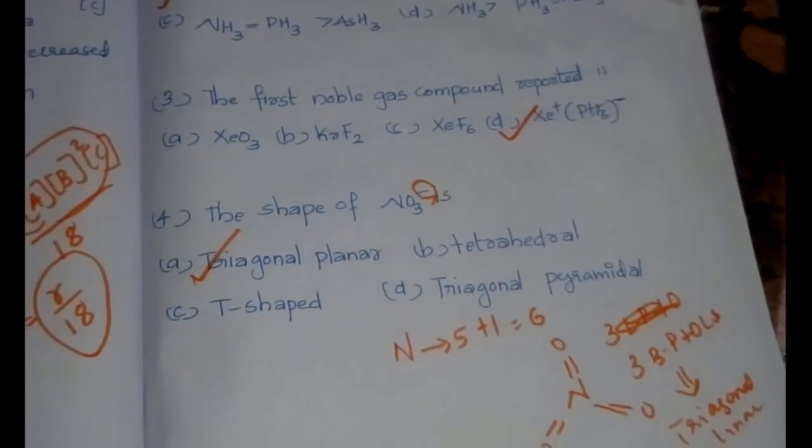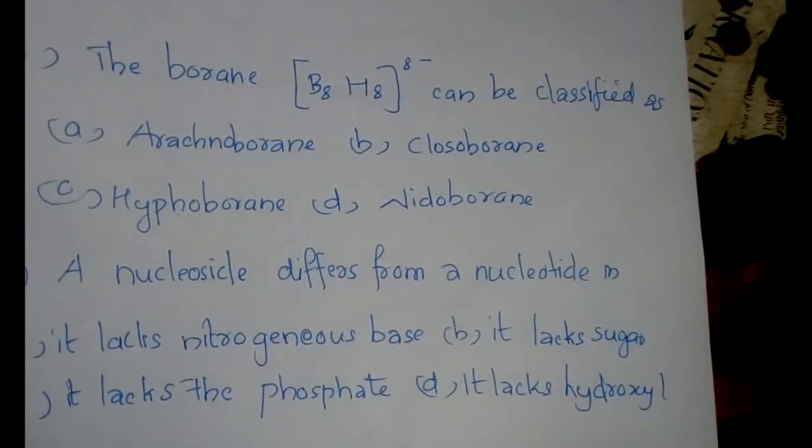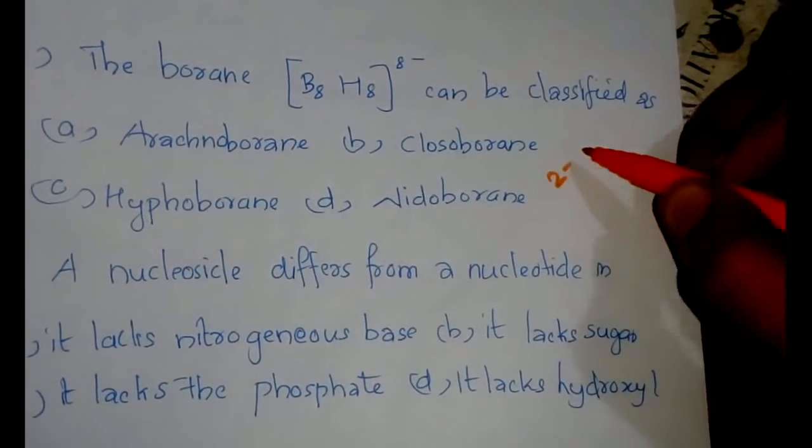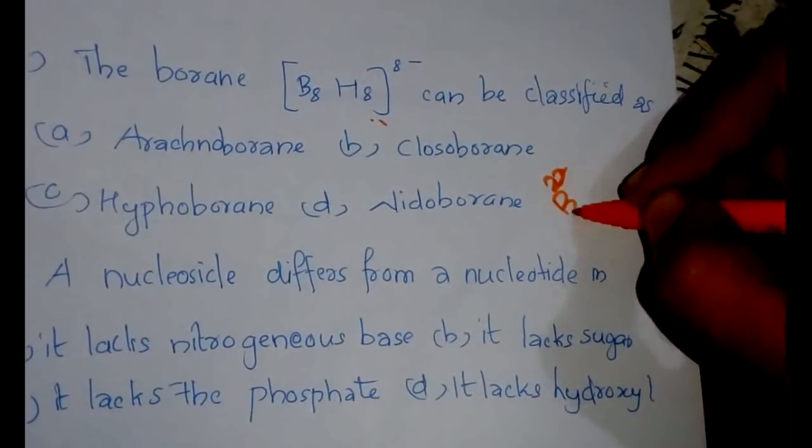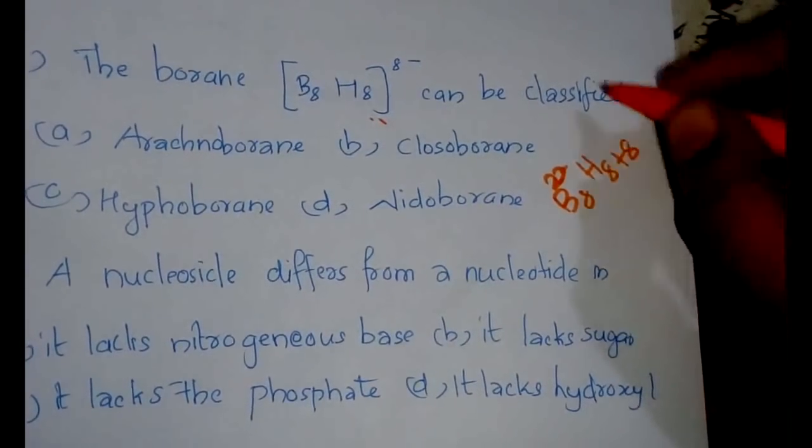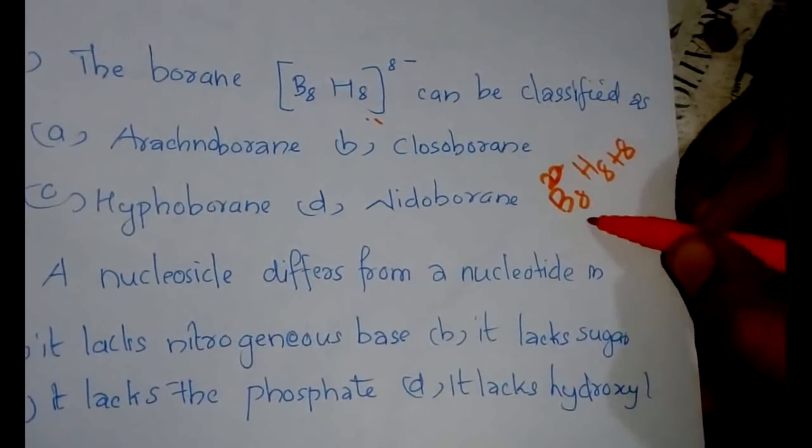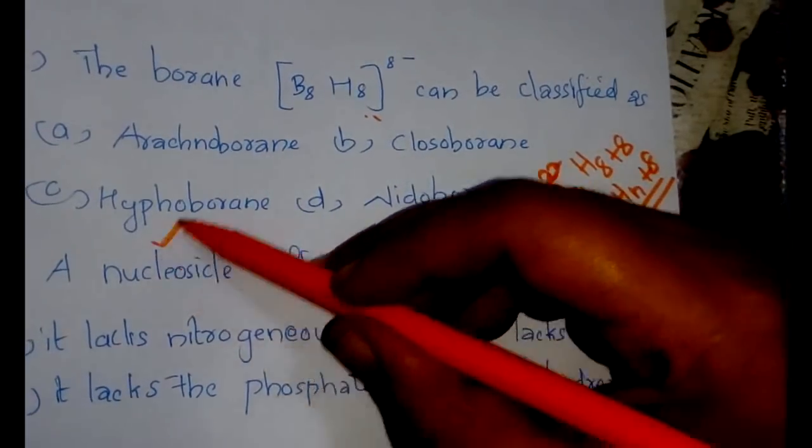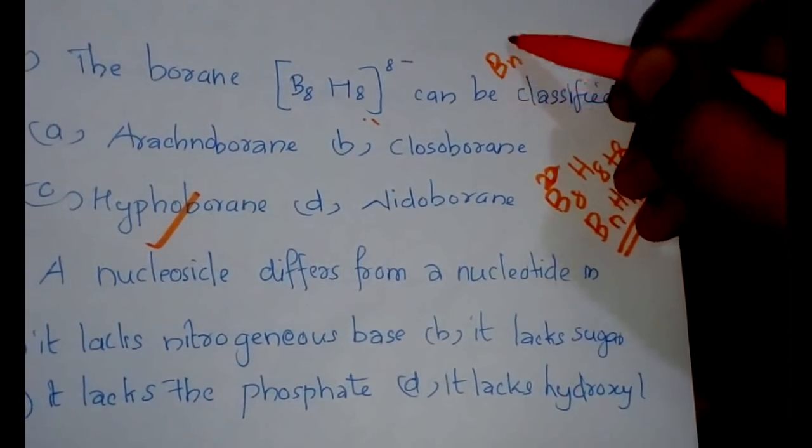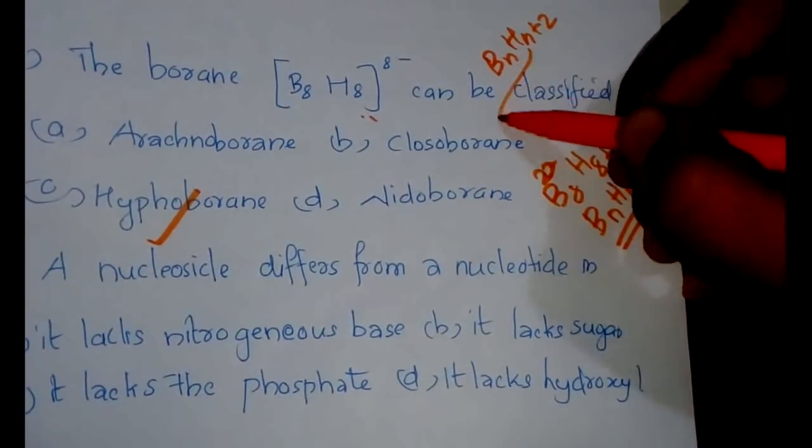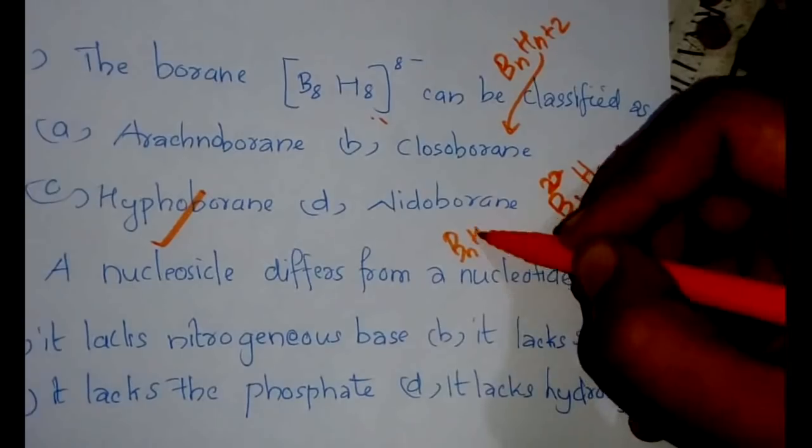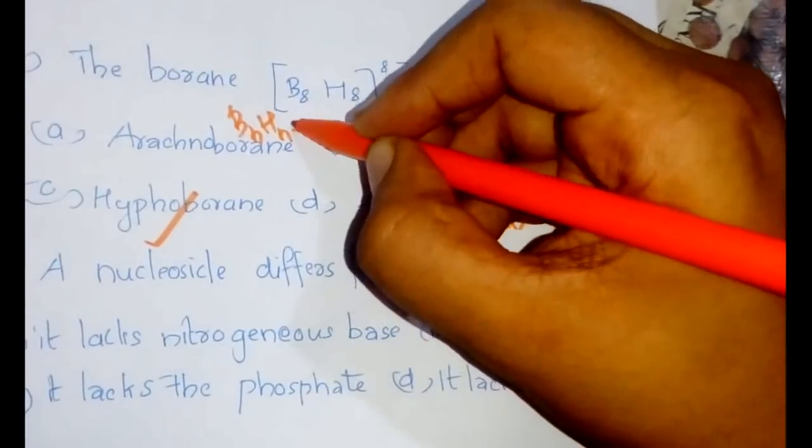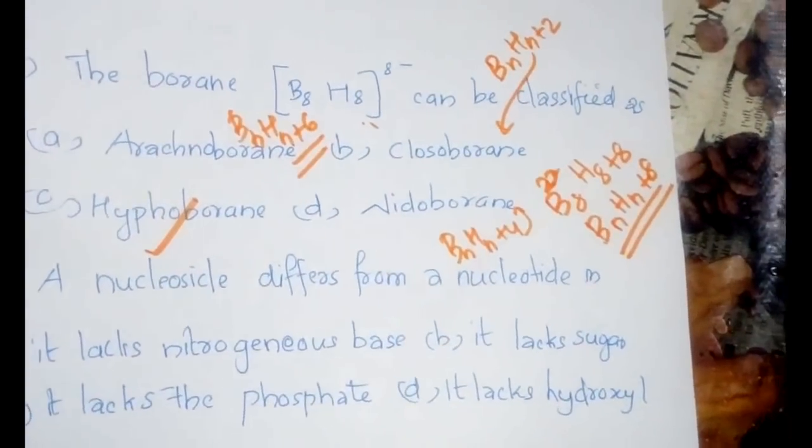The next question: the borane B₈H₈⁸⁻ can be classified as. We can rewrite this as B₈H₈ plus 8 because the 8⁻ can be added as hydrogen. It is BₙHₙ+8 which belongs to hypo borane. If it is BₙHₙ+2, it's closo; BₙHₙ+4 is nido; BₙHₙ+6 is arachno.